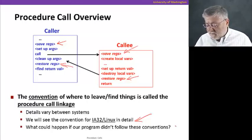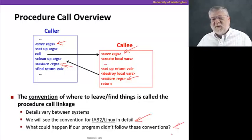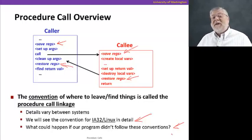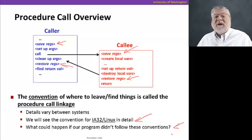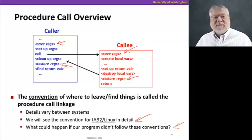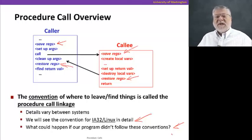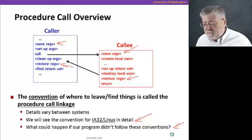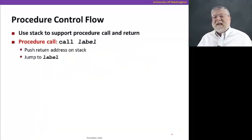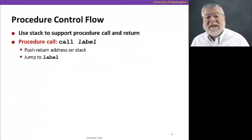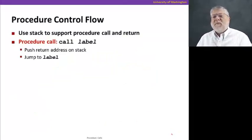If our program didn't follow these conventions, we'd be quite confused about how to do this. We'd have to think individually about every procedure, what it might have done, where it might have put things, and what it might need to save. That's too much of a burden on the programmer. That's why we like to have particular conventions — we can assume it's always done the same way. So let's take a look at this in more detail and see how it relates to the use of the stack in memory to support this procedure call and return.